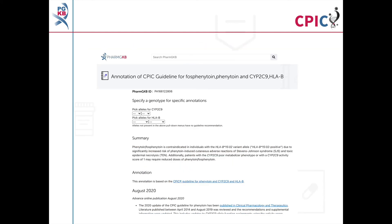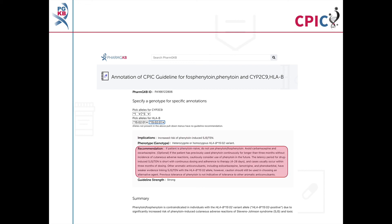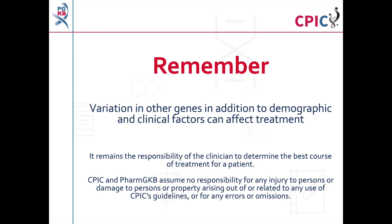This guideline has been annotated on the PharmGKB website. This includes a drop-down menu where an activity summary can be given for specific combinations of alleles. The activity summary includes implications for the patient's response to phenytoin, the appropriate dosing recommendation for the specific genotype, and the strength of that recommendation. Remember that variation in other genes, in addition to demographic and clinical factors including concomitant medications, can affect treatment. It remains the responsibility of the clinician to determine the best course of treatment for a patient.